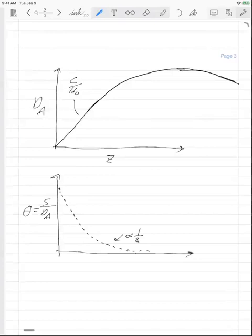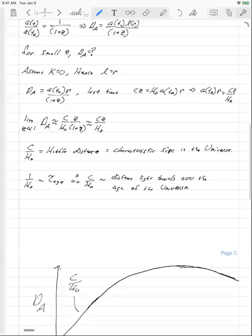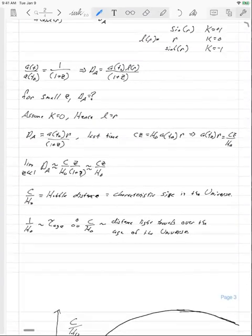But instead, what you get is you get something that tracks that initially. And the object appears smaller with Z. Object appears smaller with Z. And at some point, as Z gets larger, the object appears to be bigger again. And this effect is mostly due to the expansion of the universe.